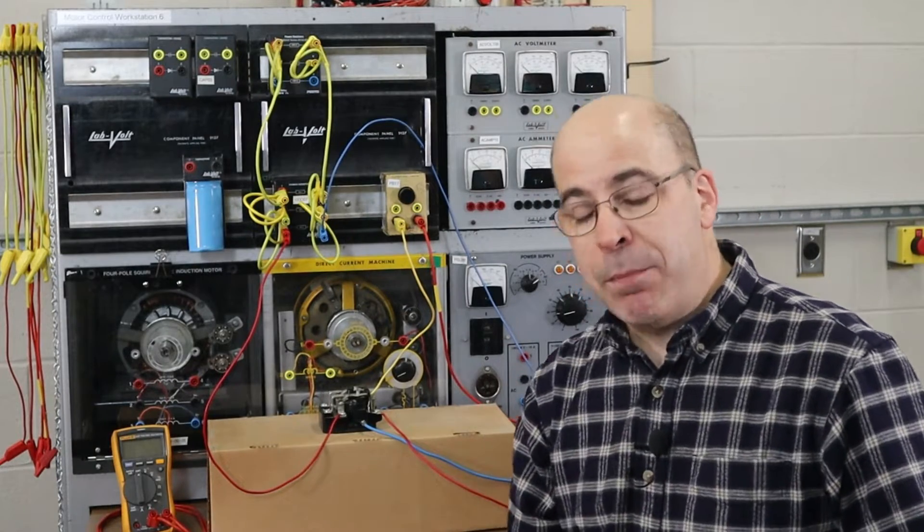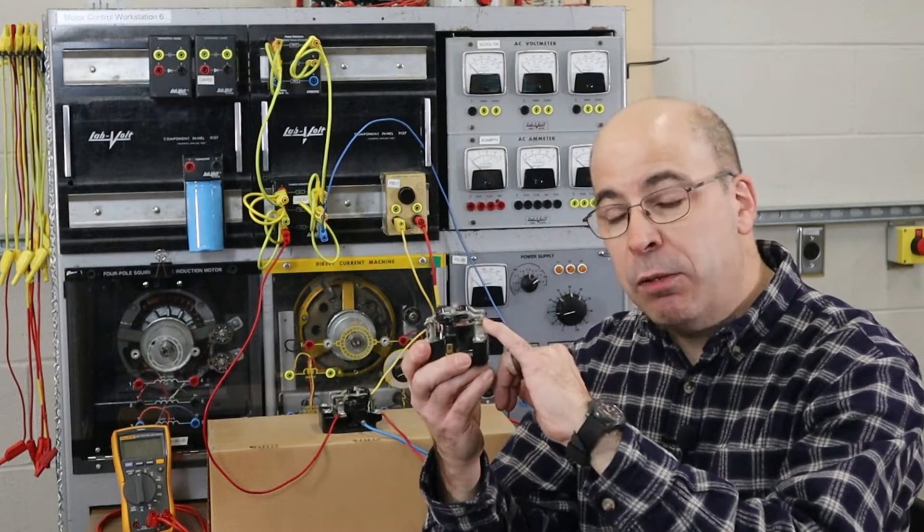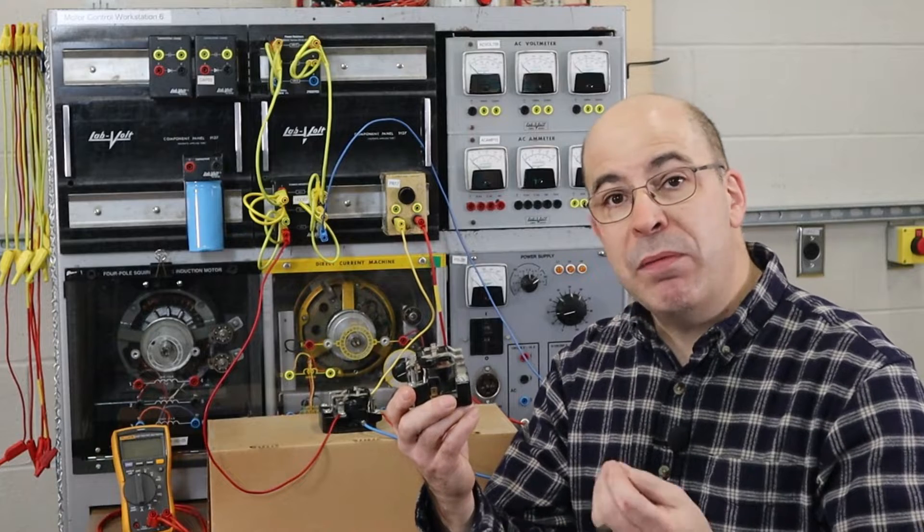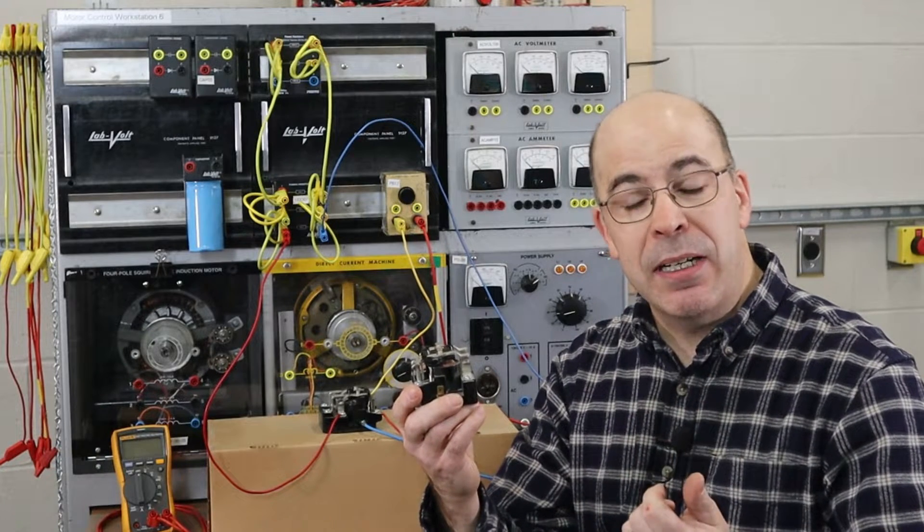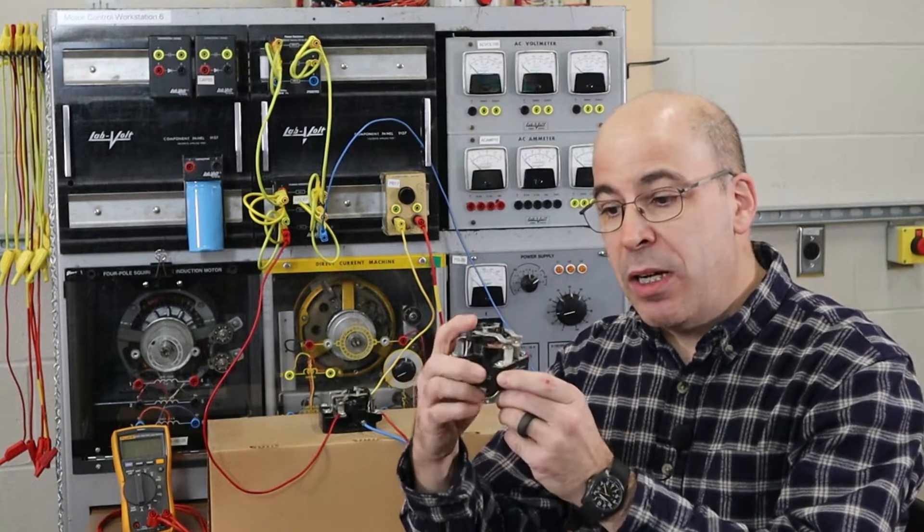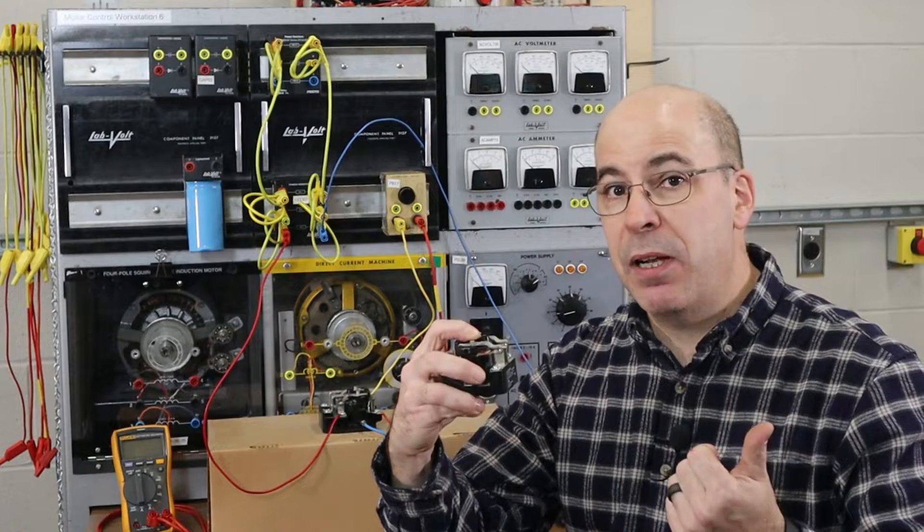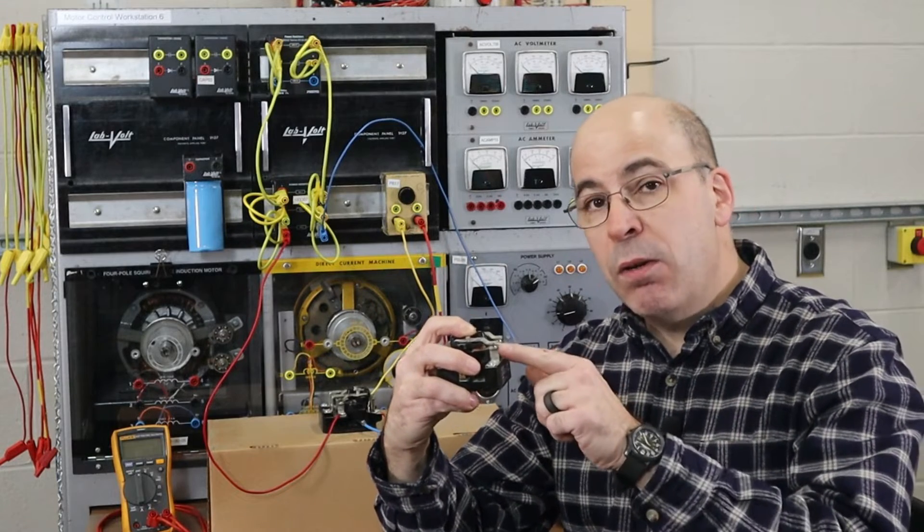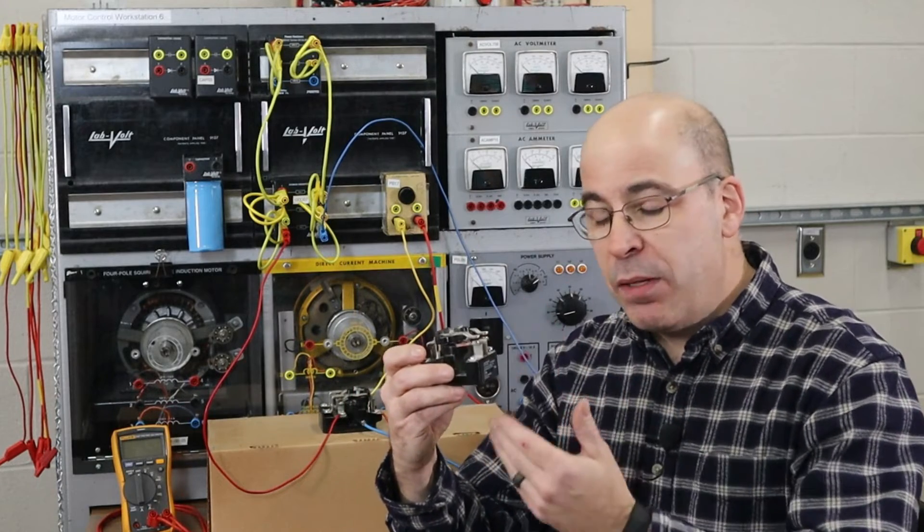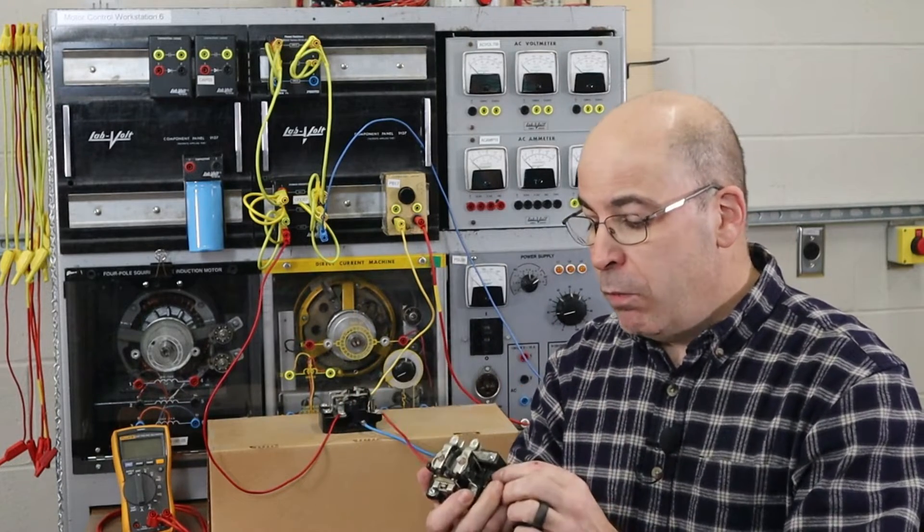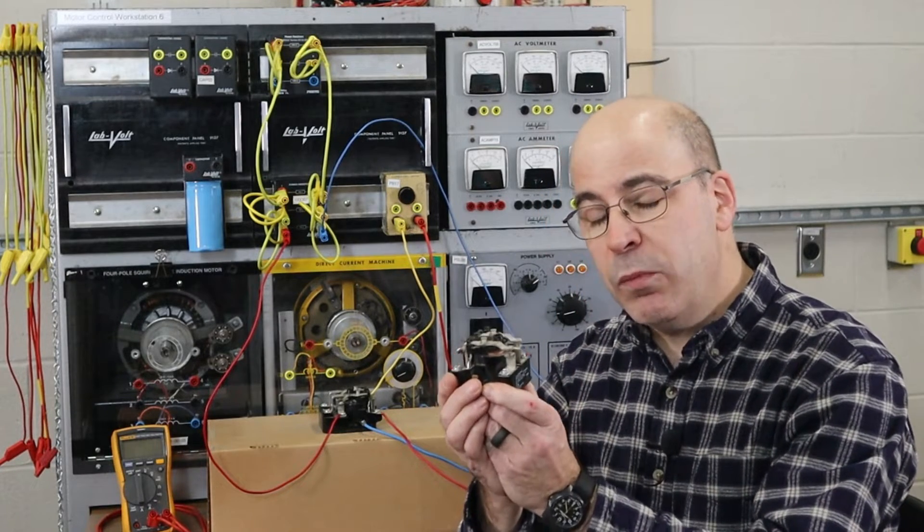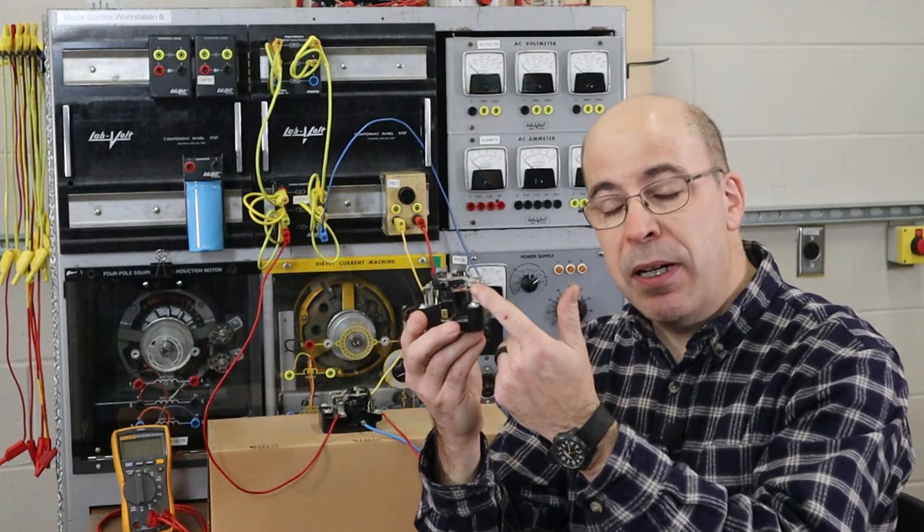Left unchecked, the contact material is going to get pitted. When we have pronounced arcing, we're also going to see a lot of heat. Left unchecked, the contacts can actually either burn themselves out or weld themselves together. For the longevity of the device, it's not ideal. What can we do to solve this problem? One way we can do this - right now we only have the one contact. But if we switch the type of device, meaning if I went to a contactor...